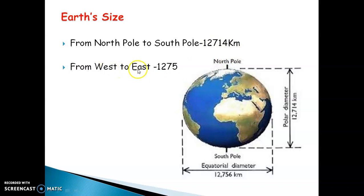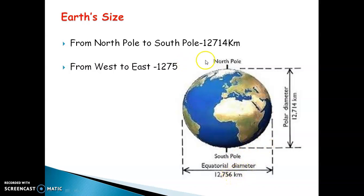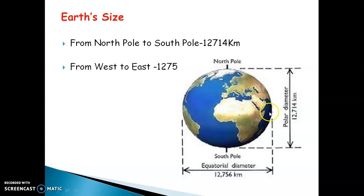The distance from West to East is 12,736 kilometers. You will realize that the distance from West to East is more as compared to the distance from North Pole to South Pole. From West to East the distance is 12,736 kilometers, whereas from North Pole to South Pole it is only 12,714 kilometers. So the distance from West to East is greater than from North to South.